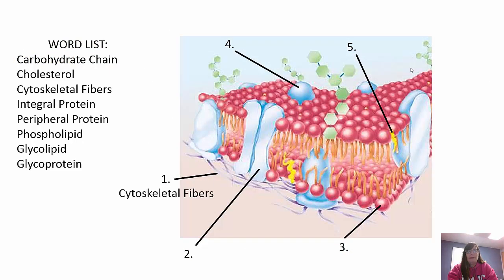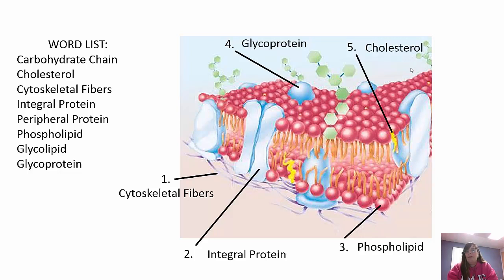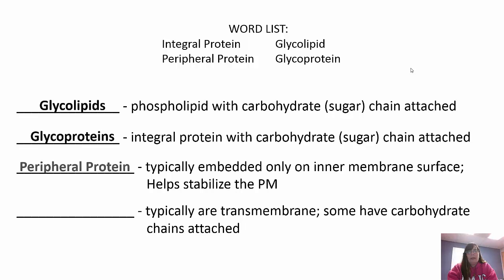You have the cytoskeletal fibers on the bottom - the internal part of the plasma membrane - and they function in stabilization; those are intermediate filaments. You have cholesterol in yellow, integral proteins which go all the way through, peripheral proteins which only go partially through, the phospholipid making up the bilayer, and the glycoprotein which is the carbohydrate chain attached to a protein. Glycolipids are a phospholipid with a carbohydrate chain attached; glycoproteins are an integral protein with a carbohydrate chain attached.